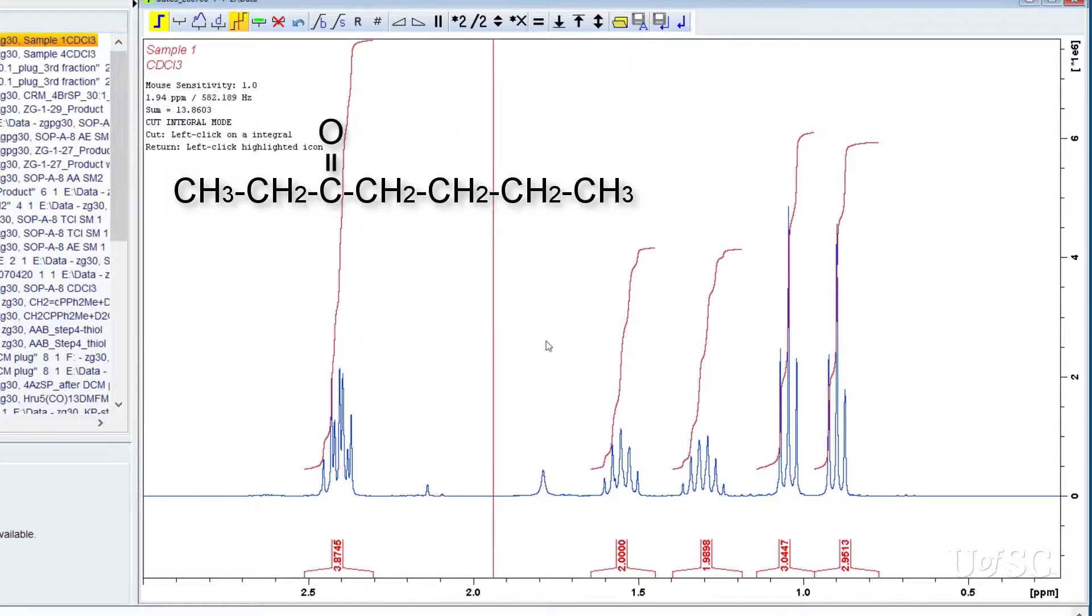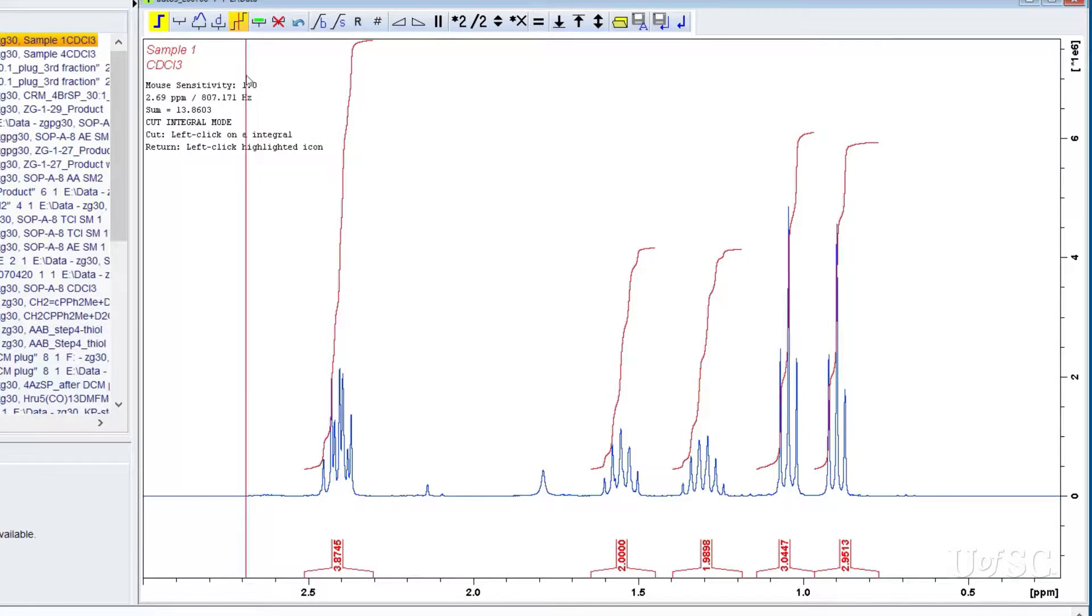Here we can see that there are 2 methyl resonances, 2 methylene, and an area with 4 protons. This is a spectrum of 3-heptanone and the 2 methylenes adjacent to the carbonyl have similar chemical shifts and are in this region.